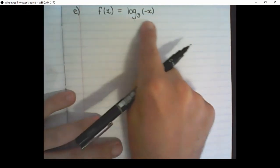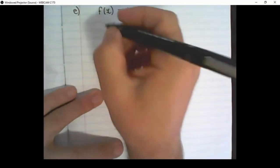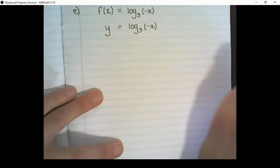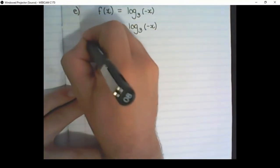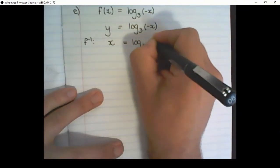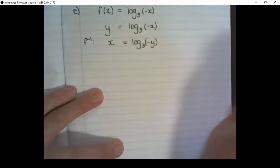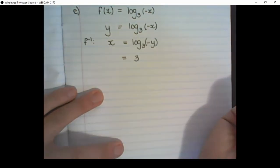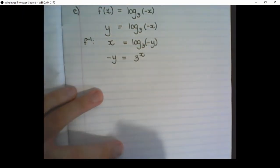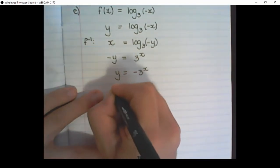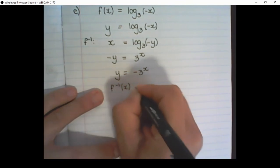We are going to find the inverse of this log function. So I replace f(x) with y, then swap x and y's positions — this shows that I'm calculating the inverse. The base of the log becomes the base of the exponent, x becomes the exponent, and we have negative y. In order to get y alone, I divide by negative 1. Then lastly, I rewrite it as the inverse function notation.